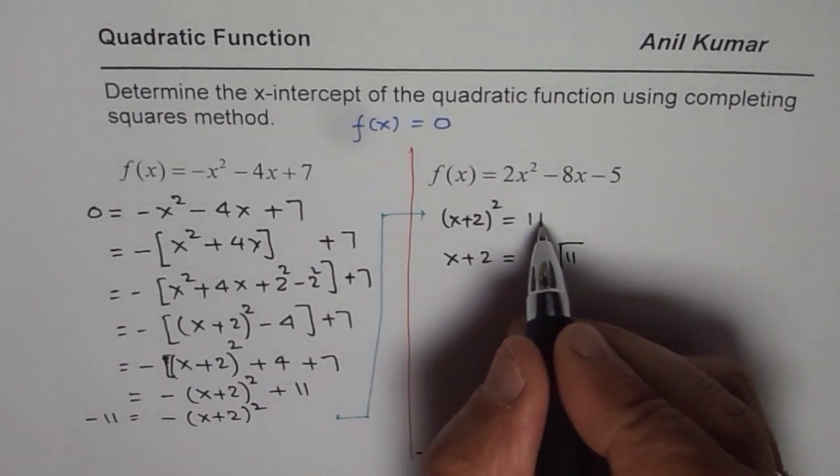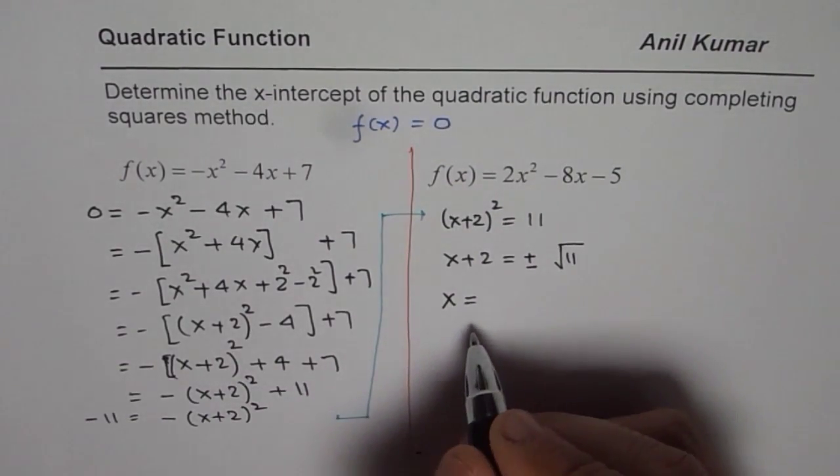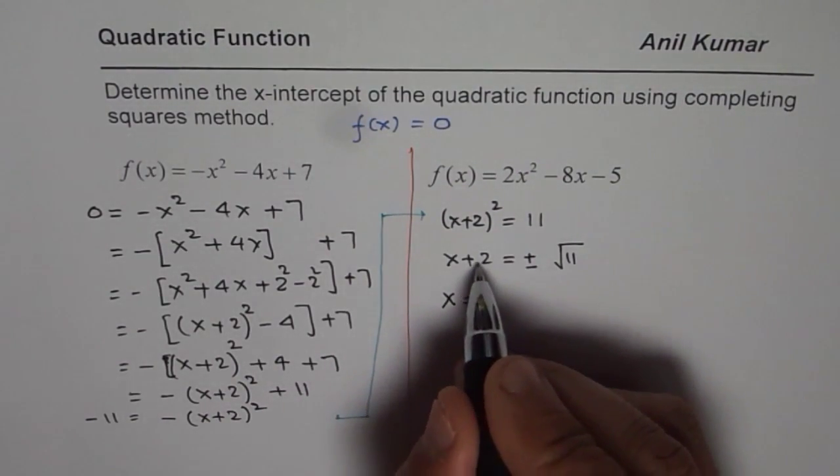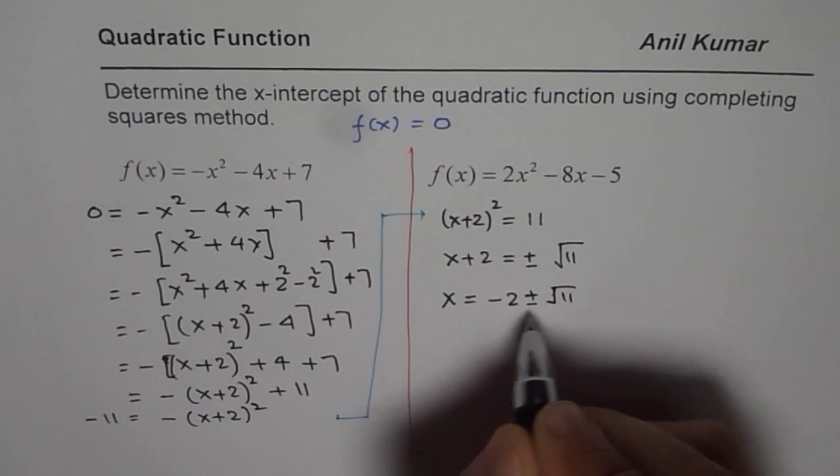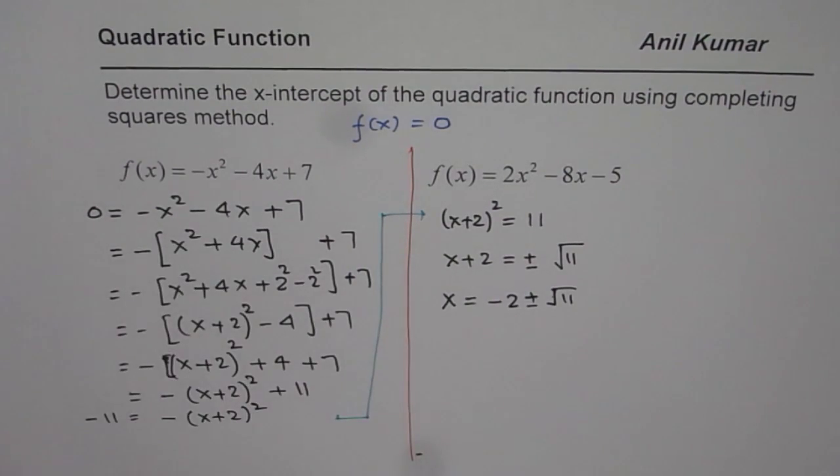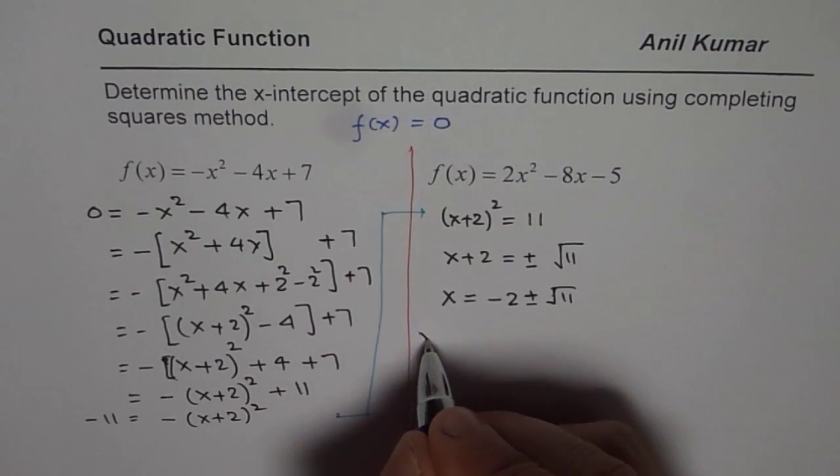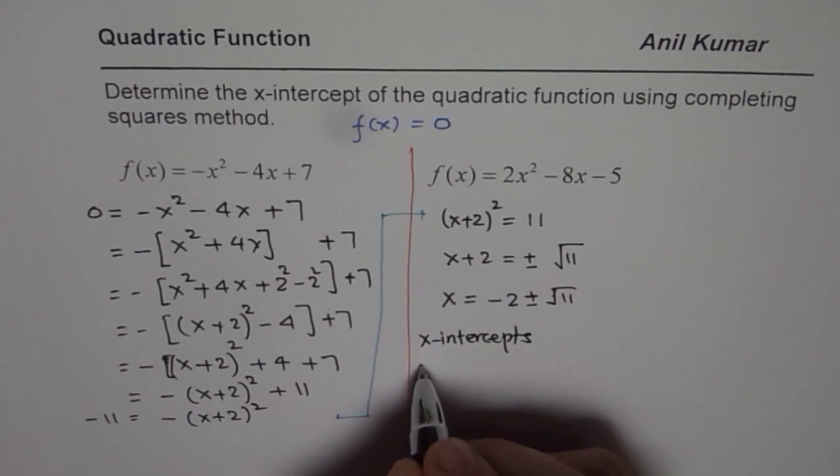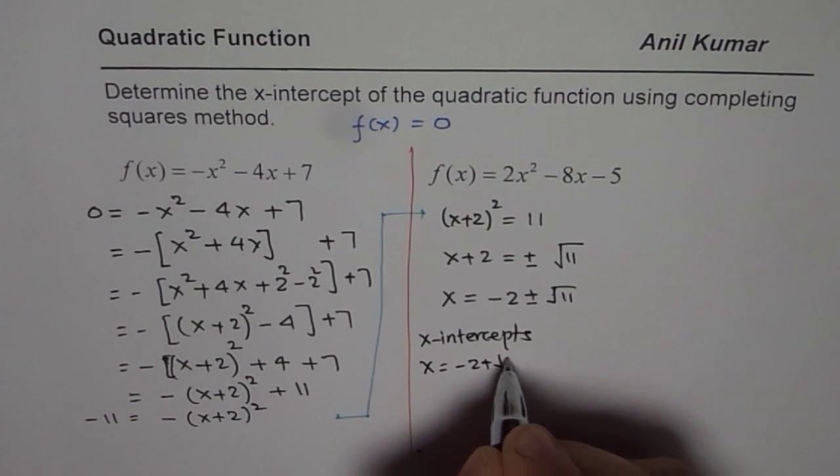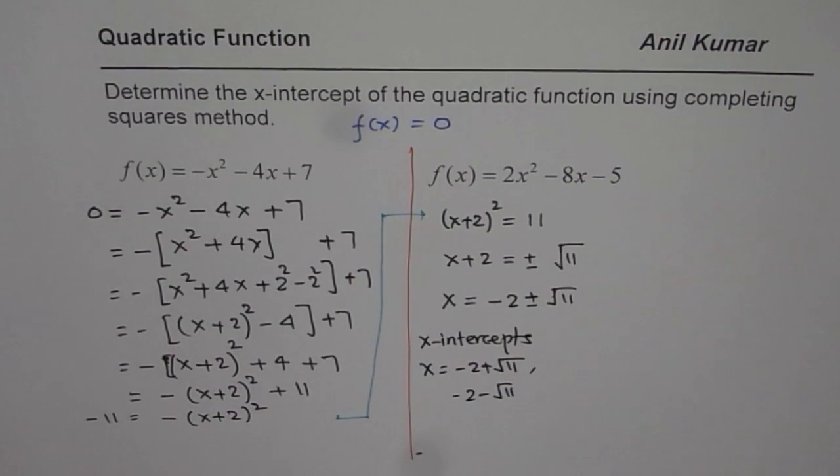Remember, whenever you square root, you have to write plus and minus. So, that gives you two values. One value is x = -2 ± √11. So, these are the two x-intercepts for the given equation. One value is -2 + √11. The other one is -2 - √11. And therefore, we get our x-intercepts as x = -2 + √11 and -2 - √11.